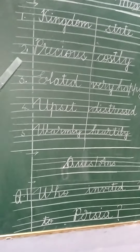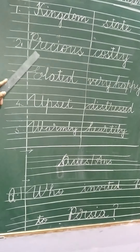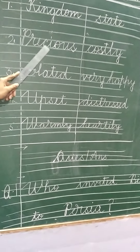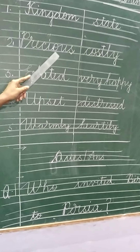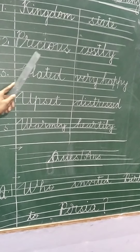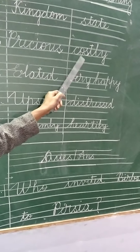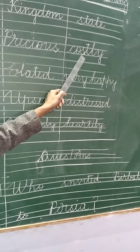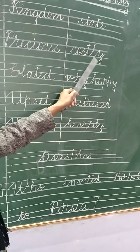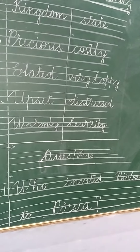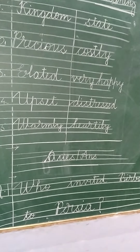Number 2: precious — P-R-E-C-I-O-U-S. Precious. The meaning of precious is costly — C-O-S-T-L-Y. Costly.